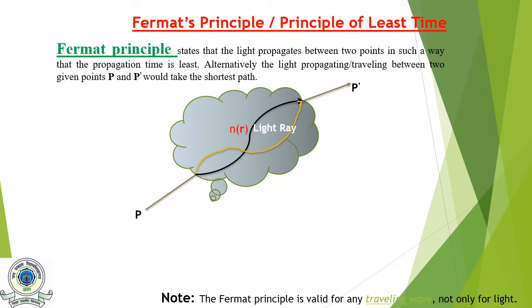What is Fermat's Principle, or the Principle of Least Time? It states that light propagates between two points in such a way that the propagation time is least. In other words, light traveling between two points takes the shortest path — meaning that of all the possible paths light might take to get from one point to another, it takes the path which requires the shortest or least time.